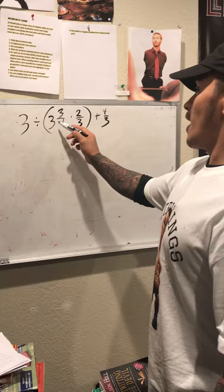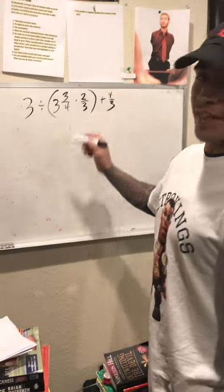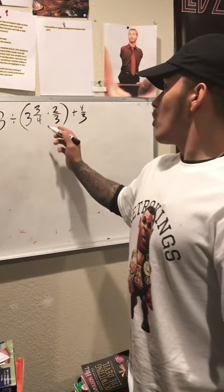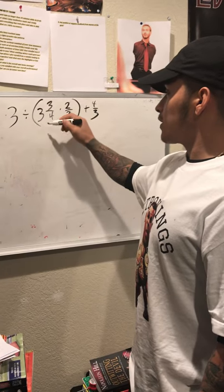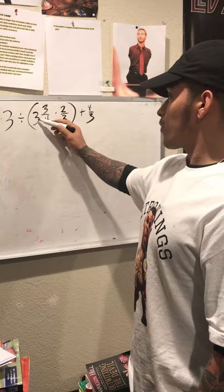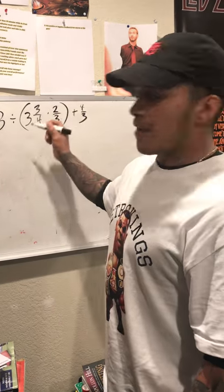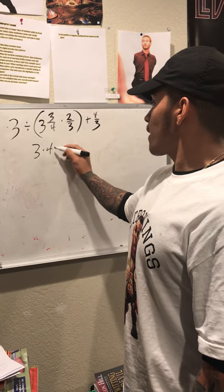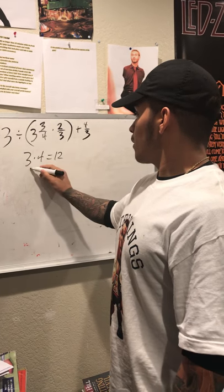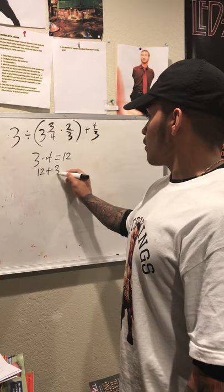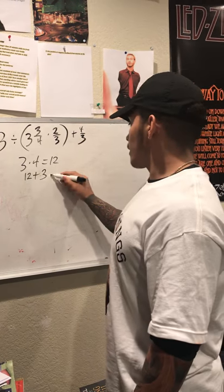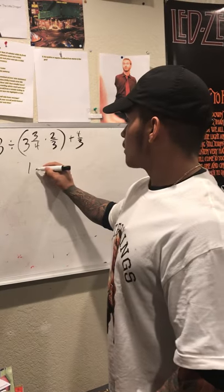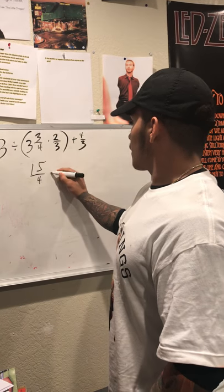This mixed number I'll need to change into an improper fraction in order to multiply times two-thirds. To do that, I'm gonna multiply the denominator of this mixed number — 4 — times the whole number 3, and then add that product to 3. So it's gonna be 3 times 4, which comes out to 12, and then I add that to the numerator 3, so it comes out to 15, which turns into 15 over 4 times 2 over 3.